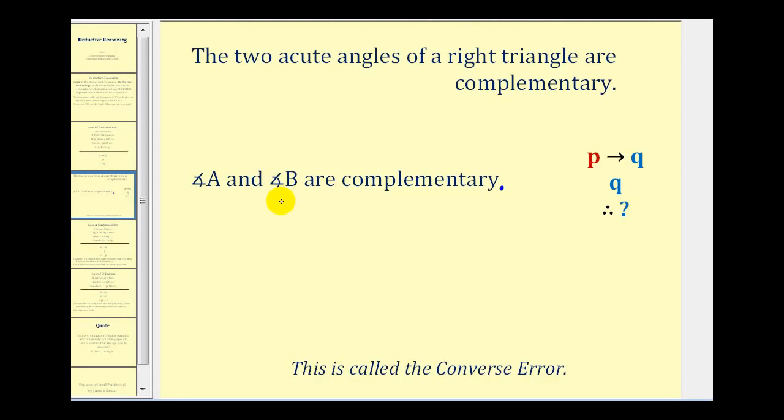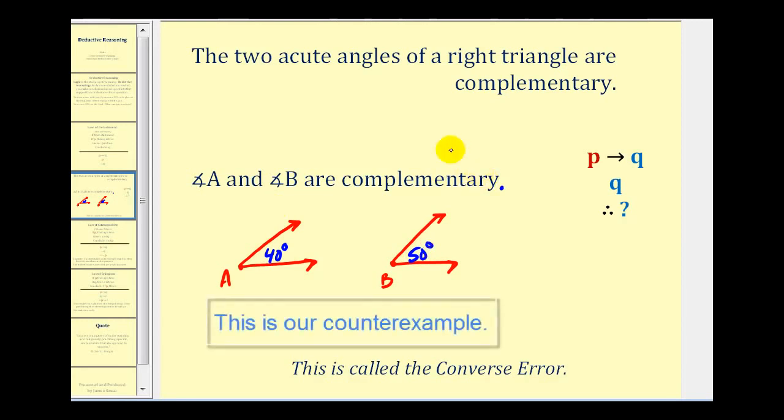If we made the conclusion that angle A and angle B are the acute angles of a right triangle, this would be a false conclusion because it is possible for A and B to be complementary but not be the two acute angles of a right triangle. For example, let's say angle A is 40 degrees and angle B is 50 degrees. They are complementary but they are not the acute angles of a right triangle.